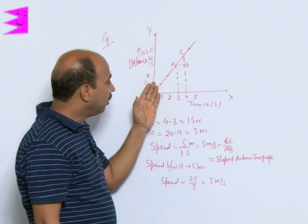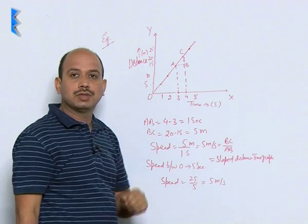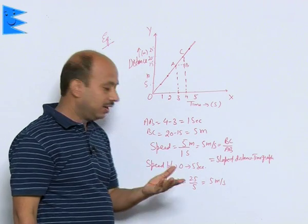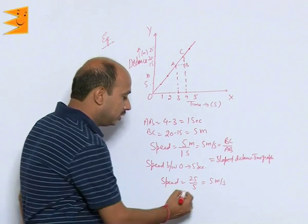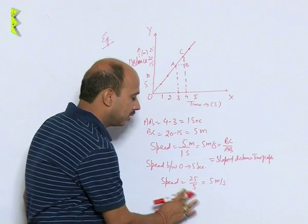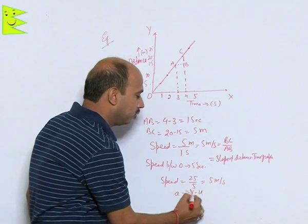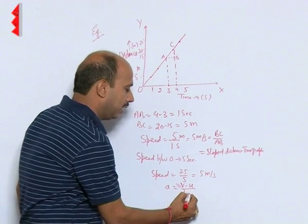Now, if you want to calculate acceleration from this. What is acceleration? Acceleration A is equal to you can write change in velocity that we can write V minus U divided by T2 minus T1.